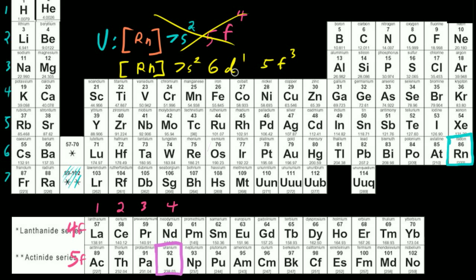Basically, what I'm trying to show you is that uranium is an exception — there's not really a clear rule for figuring out the electron configurations for uranium, like we have clear rules for everything in our P block and everything in our S block.